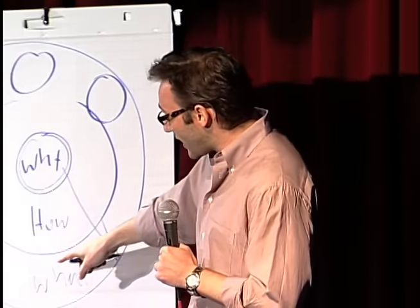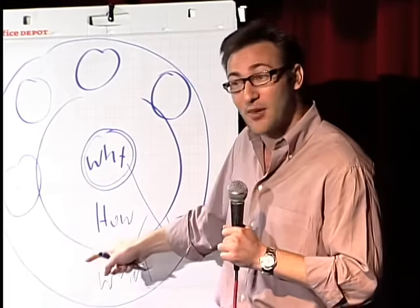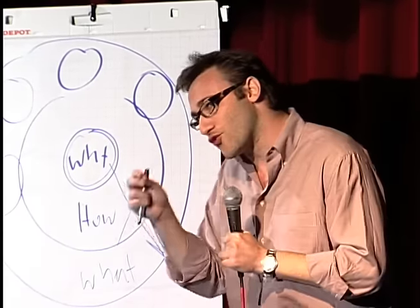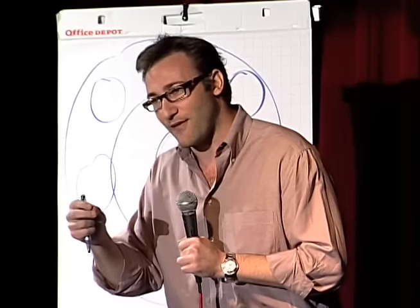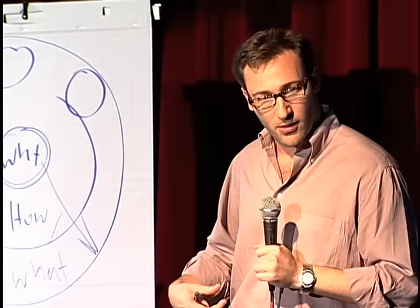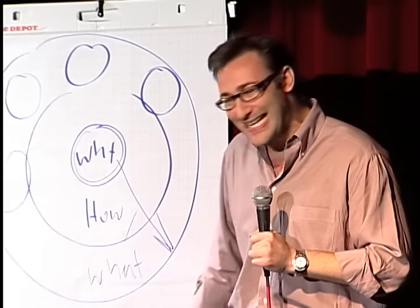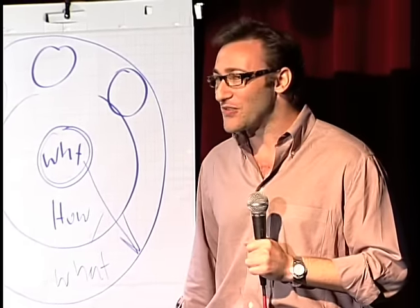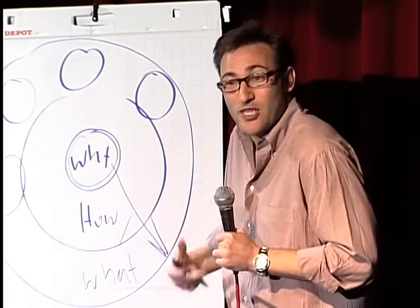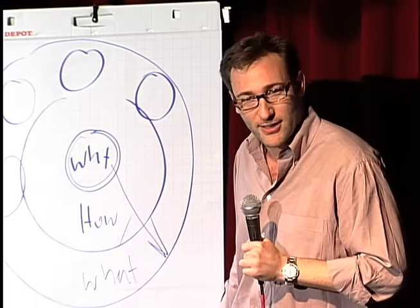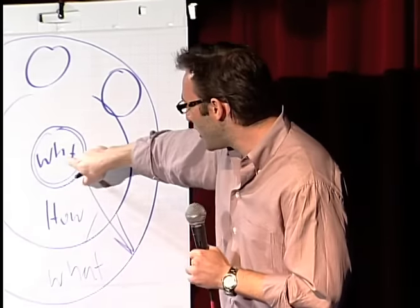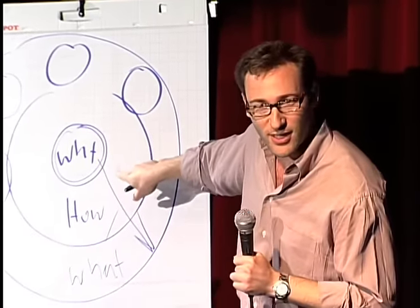In other words, when we communicate from the outside in, yes, people can understand vast amounts of complicated information, like features and benefits and facts and figures. It just doesn't drive behavior. When we communicate from the inside out, we're talking directly to the part of the brain that controls behavior, and then we allow people to rationalize it with the tangible things we say and do. This is where gut decisions come from. You know, sometimes you can give somebody all the facts and figures, and they say, I know what all the facts and details say, but it just doesn't feel right. Why would we use that verb? It doesn't feel right. Because the part of the brain that controls decision-making doesn't control language. And the best we can muster up is, I don't know, it just doesn't feel right. Or sometimes you say you're leading with your heart, or you're leading with your soul. Well, I hate to break it to you, there aren't other body parts controlling your behavior. It's all happening here in your limbic brain, the part of the brain that controls decision-making and not language.